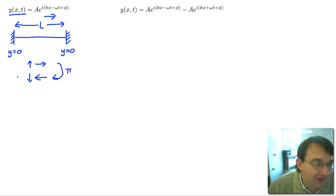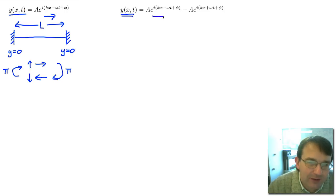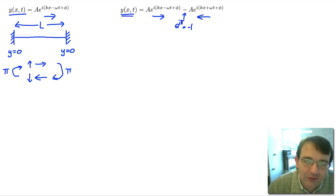This negative pulse is now travelling in the negative x direction until it gets to the next boundary, where it also has a reflection with a phase change of pi, and it becomes a positive-going pulse with a positive upwards displacement. So our net displacement for the string is going to consist of waves travelling in the positive x direction plus waves travelling in the negative x direction — we've got both. The waves travelling in the negative x direction will have the opposite sign, a phase change of pi, so e to the i pi equals minus 1, which is why we have this minus sign for the negative-going waves.